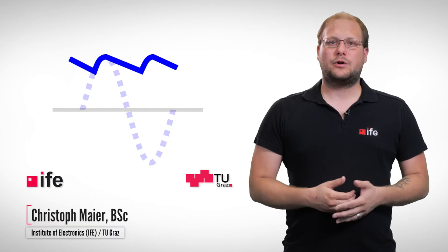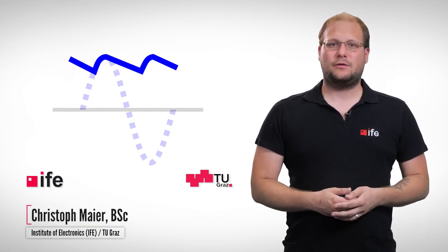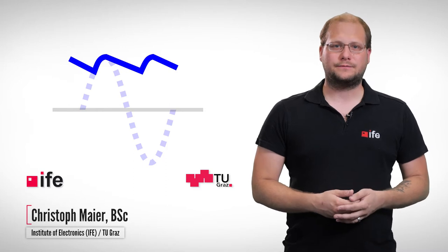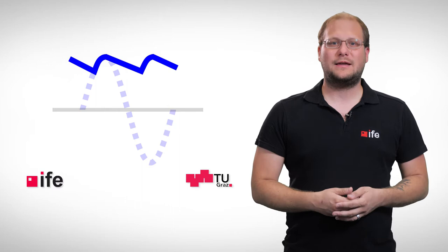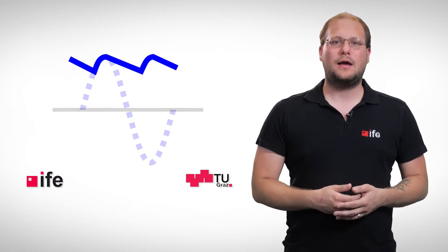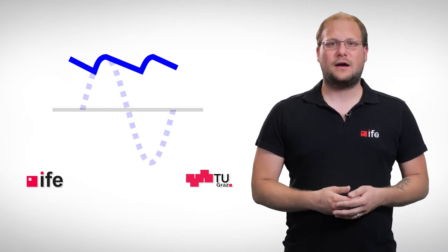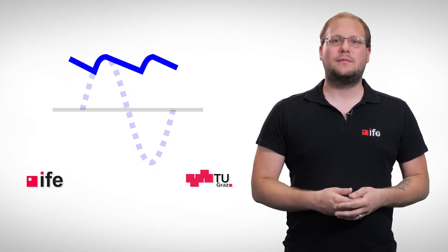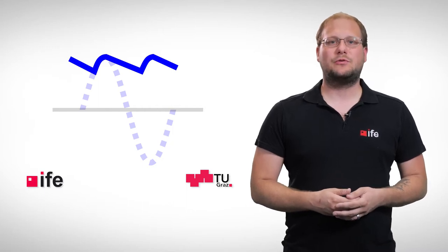Every electronic device requires a power supply. The power can be provided by a battery or via the power grid. Since electronic circuits often need different voltage levels, and sometimes quite a lot of them, a power supply unit is required. Various circuit topologies are used for this purpose. The most important types are linear voltage regulators and switched mode power supplies.